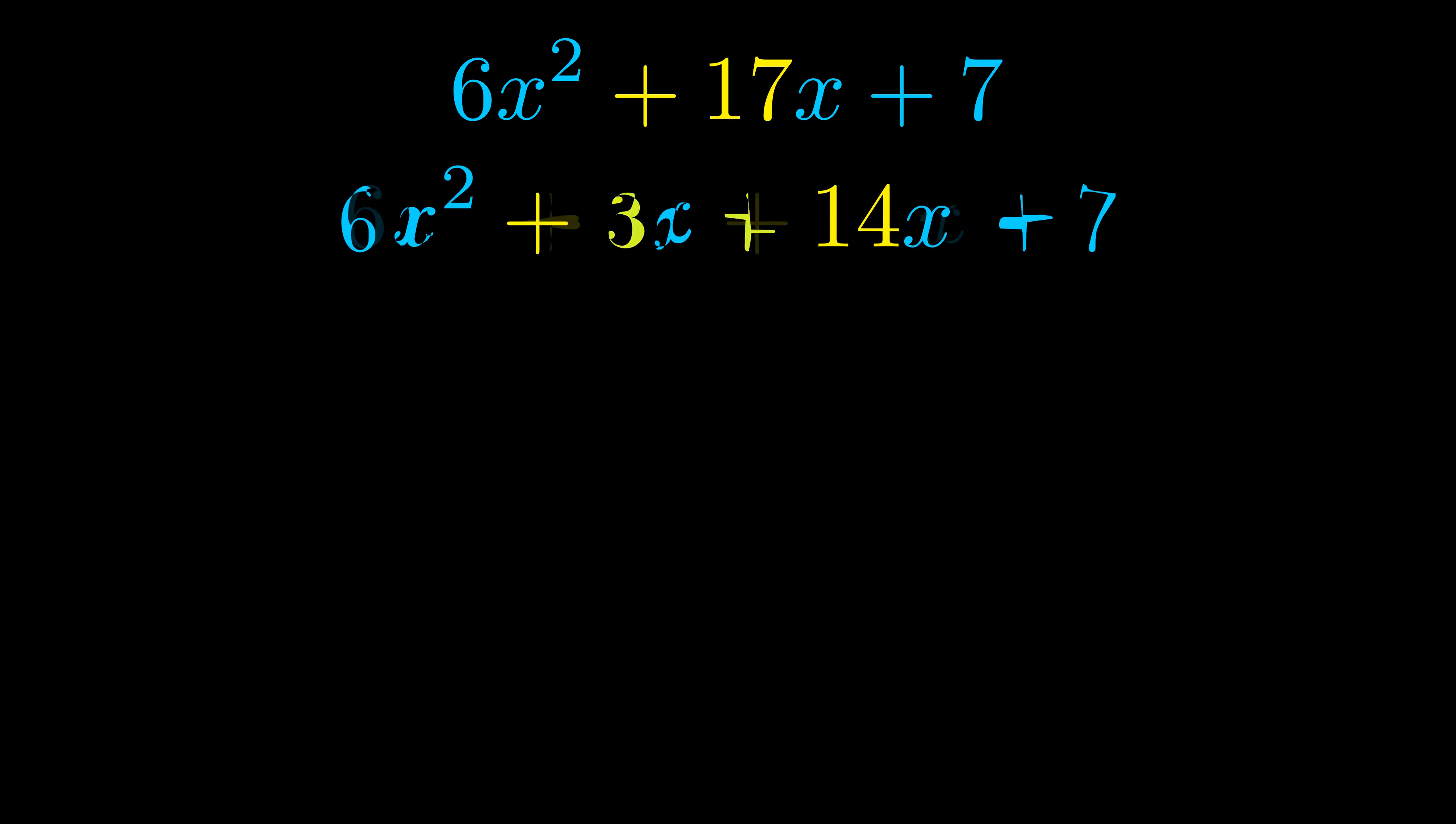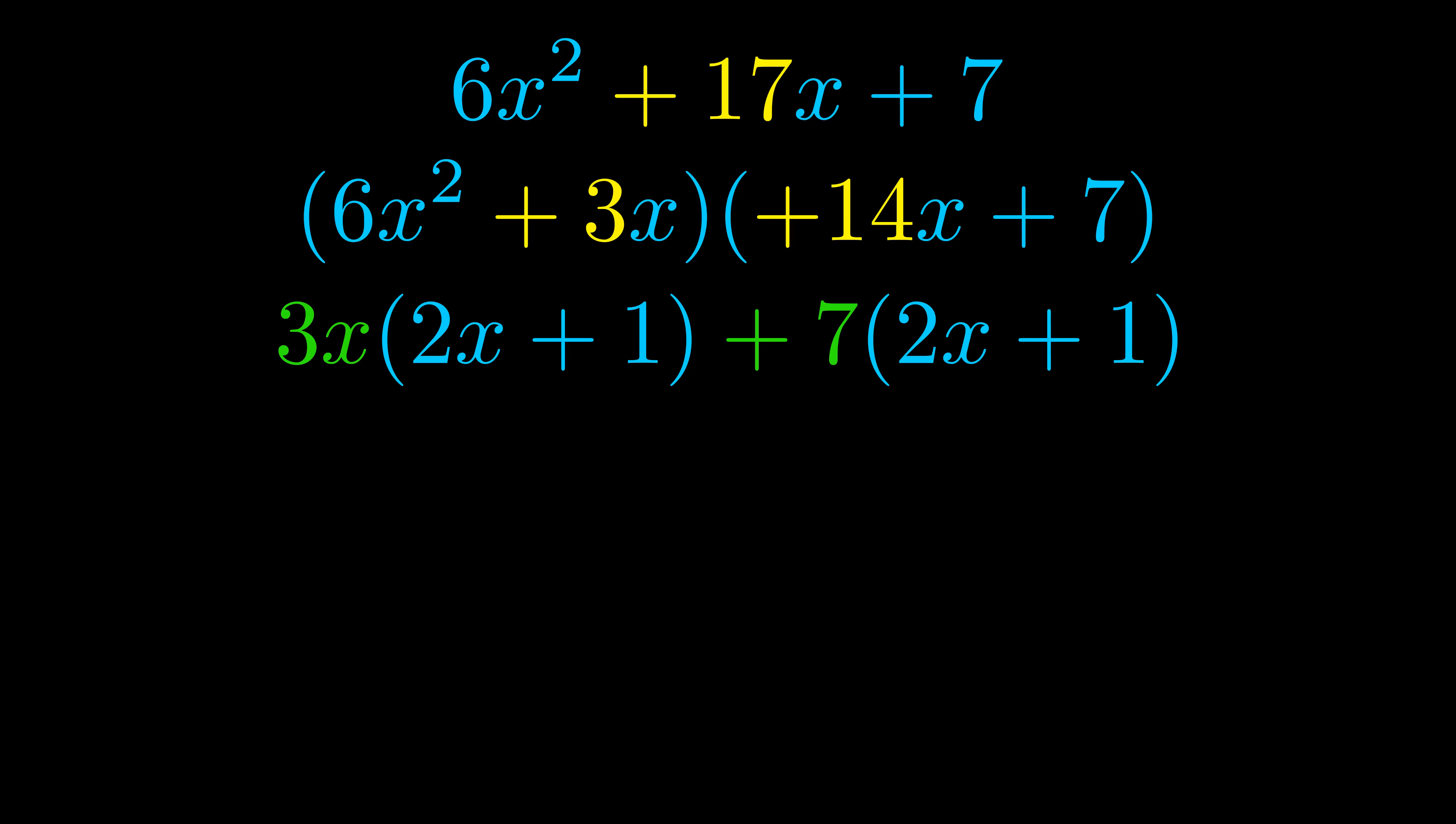Once we've done this we go ahead and put parentheses around the first term and the last term and we do that so that we can take the greatest common factor out of both terms. We can see the greatest common factor is now outside in green.